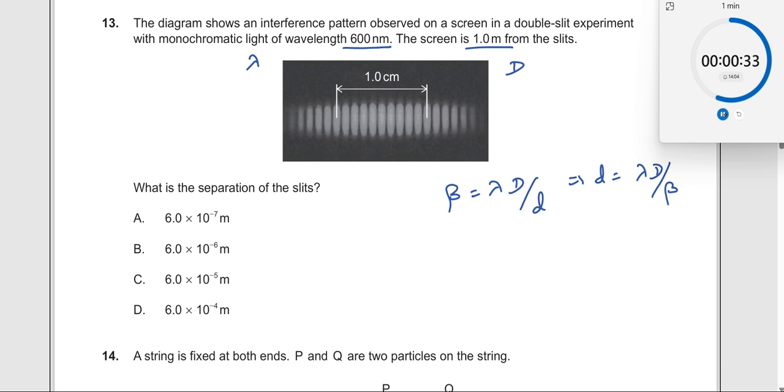So if you count the number of fringes here, you see from here 1, 2, 3, 4, 5, 6, 7, 8, 9, 10. There are 10 fringes in between these two. So which means that 10 times beta is equal to 1 centimeter.